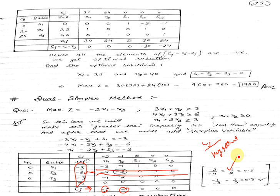We divide the Cj row by the key row values. Minus two divided by minus four gives one-half, which equals 0.5. Minus one divided by minus three gives one-third, which is approximately 0.33. In the ratio part we are still required to select the least positive value, and that value is 0.33, so this will be our key element — minus three will be the key element.